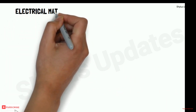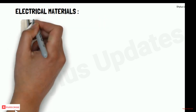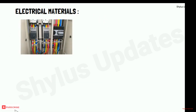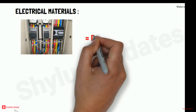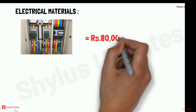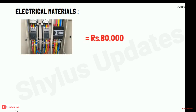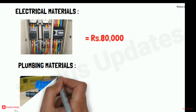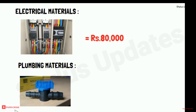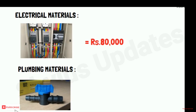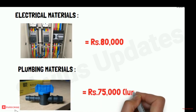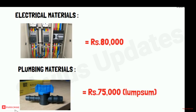For a 750 square feet house, the total amount for electrical material items is rupees 80,000. For plumbing materials, the total amount for a 750 square feet house is rupees 75,000.